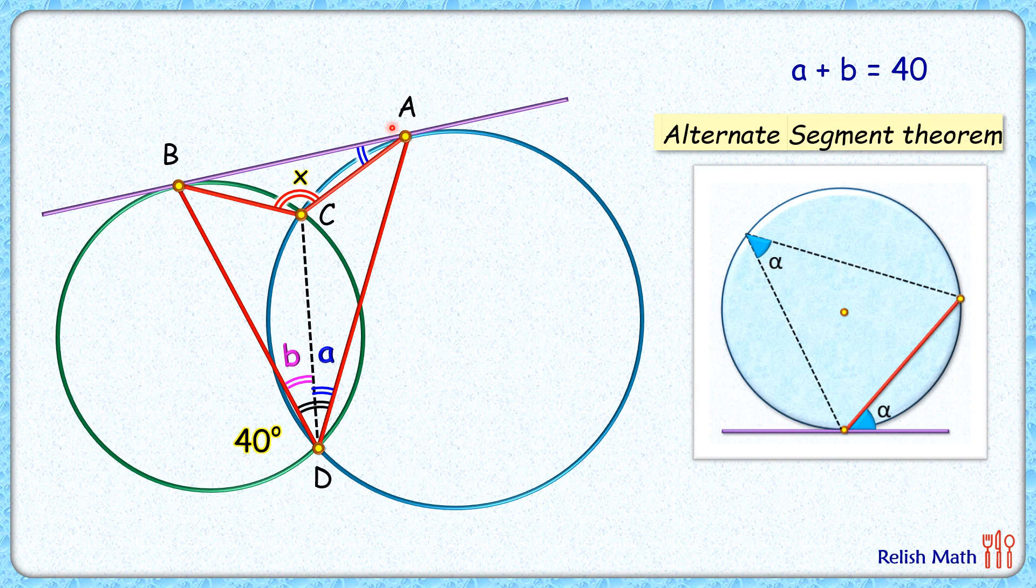Same logic: BC is the chord in this green circle and it's forming this angle here with the tangent. So this angle will be the same as the angle formed by BC chord in the remaining part of the segment. So this angle will be b degrees.